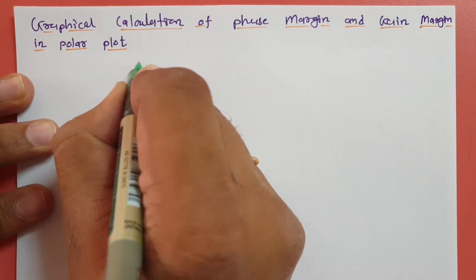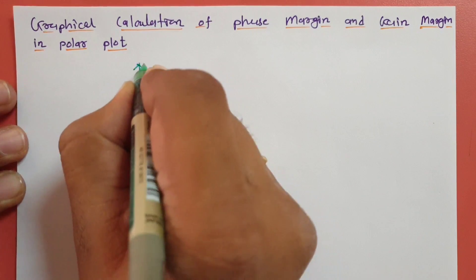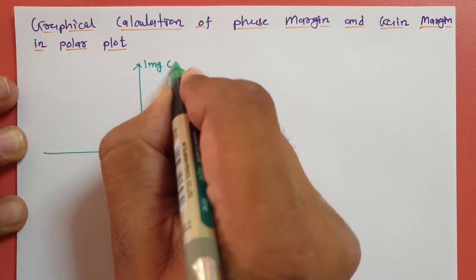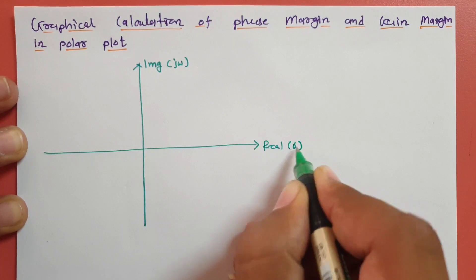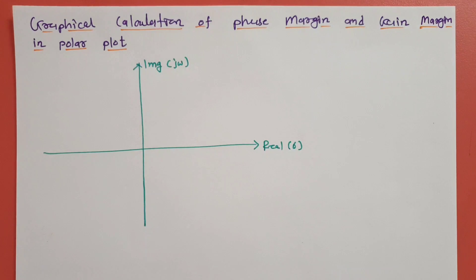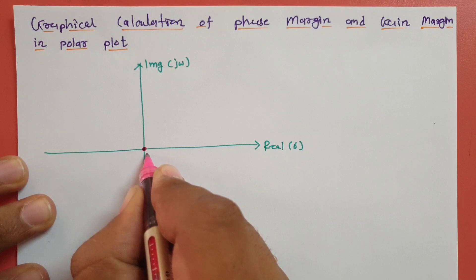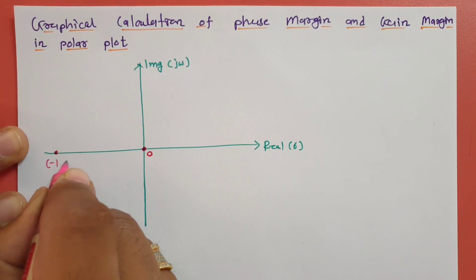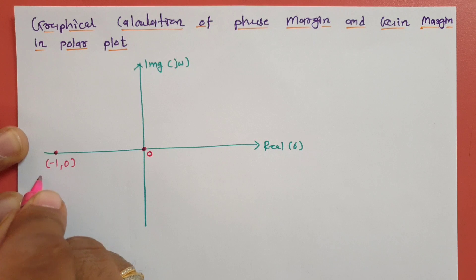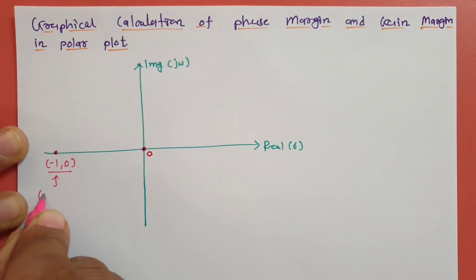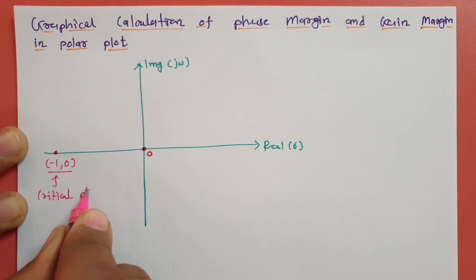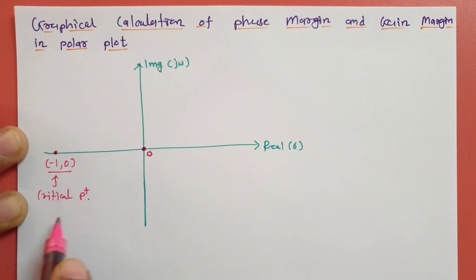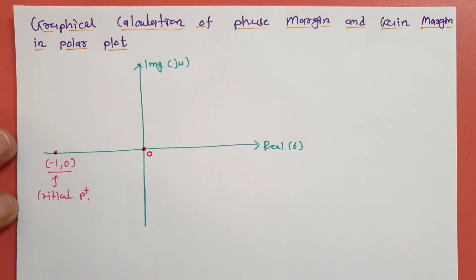So let us have a polar plot. On the y-axis in a polar plot, we have the imaginary axis, and on the x-axis we have the real axis. The imaginary axis is j-omega and the real axis is sigma. Now, there are a few basic things one should know. There is the origin, and one important point with coordinates minus 1 comma 0, which is the critical point in the polar plot.